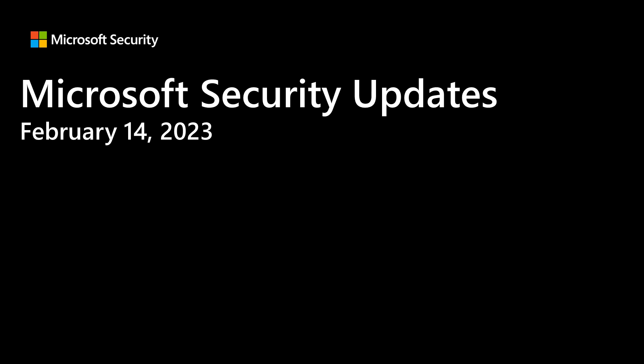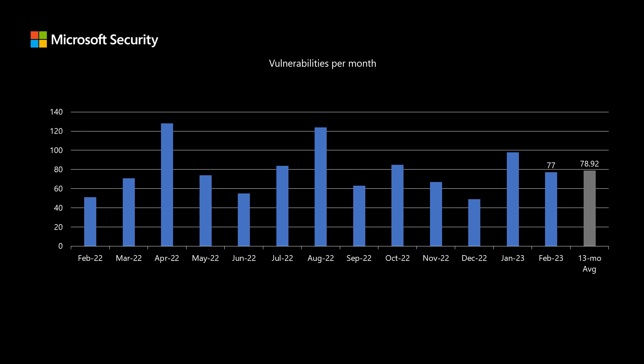Please note that the details of the vulnerabilities we are covering in this video may change, and the authoritative location for information will always be the online content in the security update guide. Before I dive into the vulnerabilities from today's release, I like to compare this release to the previous 12 months so we get a full 13-month average. As far as the number of vulnerabilities, we've been averaging almost 79 per month. This month there are 77 new vulnerabilities, just a shade under our average.